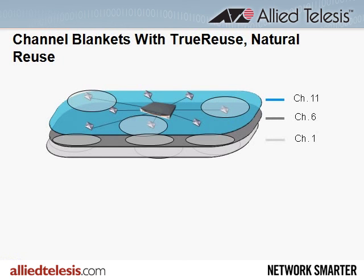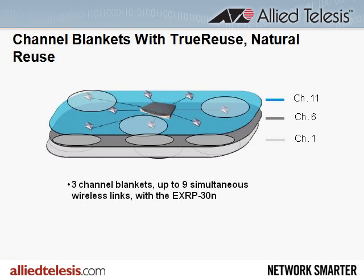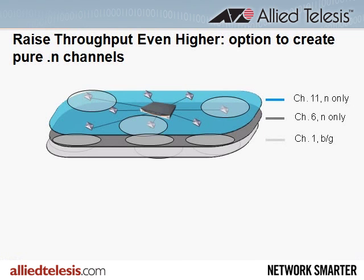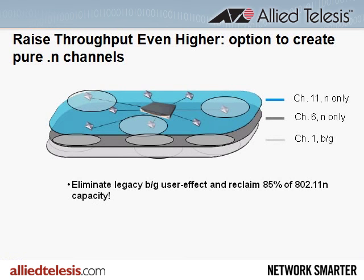The 5GHz band opens up the option of running up to four channel blankets in parallel. Another bandwidth multiplier is the fact that the channel blanket architecture gives us the option to segregate 802.11n users onto their own 40MHz channel blanket, or onto two 20MHz channel blankets as shown here. Legacy users are restricted to channel 1, where they will still have all the bandwidth they need. This is of critical importance because removal of the legacy users from the n channels can provide an additional seven times more throughput, as we reclaim the high-speed bandwidth that those slower users would have wasted. This kind of segregation within a single band is impossible to implement in a microcell architecture.